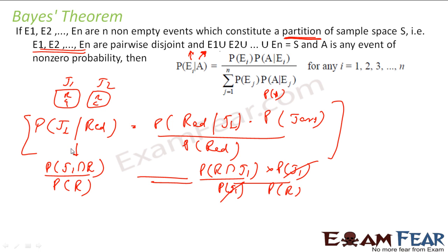Till now we used to find probability of red given jar 1 — you have two jars, the probability that jar 1 is selected, and then you find the probability the ball is red. Now I am doing it the other way around. I got one ball and the ball is red; I want to find whether it is from jar 1 or jar 2. For this, I am using the same formulas — finding probability of red given jar 1, multiplying by probability of jar 1, divided by probability of red. That is what Bayes' theorem is. It is not that difficult.